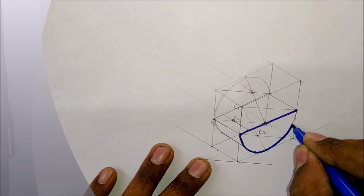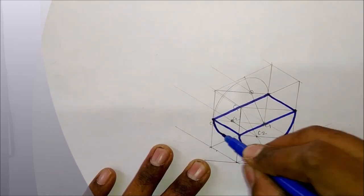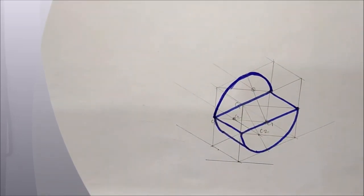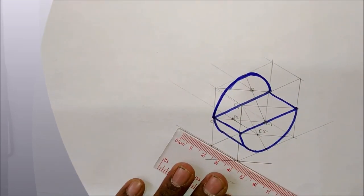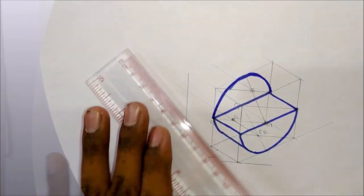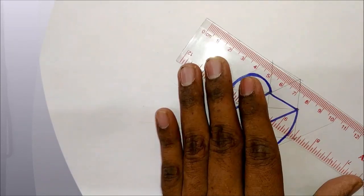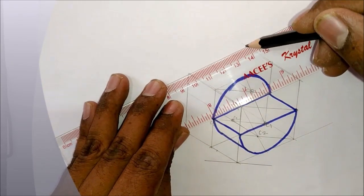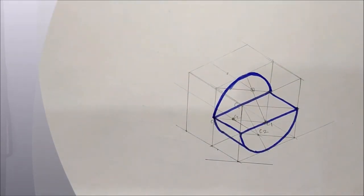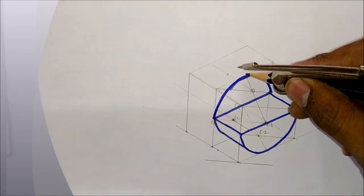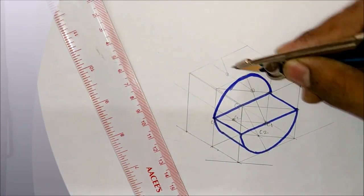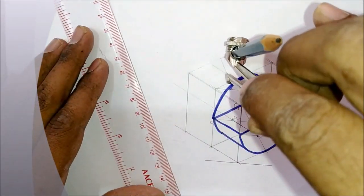Now darken all the constructed lines to avoid the confusion. Now again construct one more square 20mm behind. So middle square to construct the remaining part. So here we are using shifting method. We have shifted the center and radius to construct the arc.